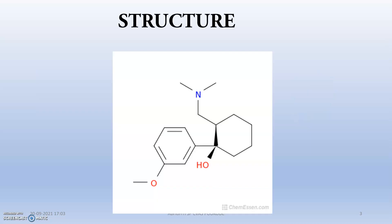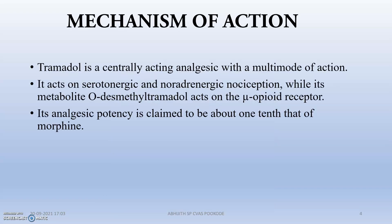This is actually the structure of Tramadol. You can see a benzene ring attached to nitrogen-containing rings. The mechanism of action is centrally acting analgesic with a multi-mode of action. It acts on serotonergic and noradrenergic nociception, while its metabolite O-desmethyltramadol acts on the mu opioid receptor.